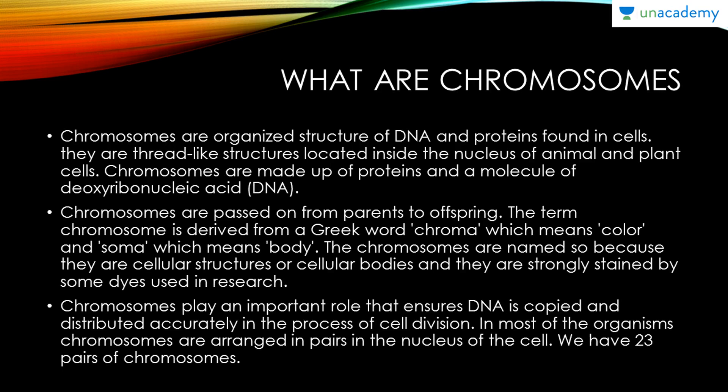What are chromosomes? Chromosomes are organized structures of DNA and proteins found in cells. They are thread-like structures located inside the nucleus of animal and plant cells. Chromosomes are made up of proteins and a molecule of DNA, and are composed of deoxyribonucleic acid — DNA.